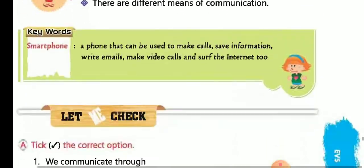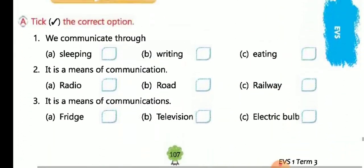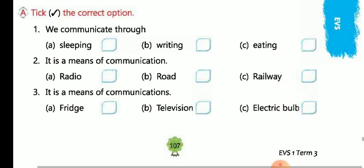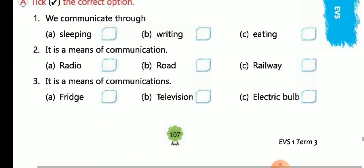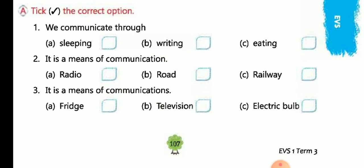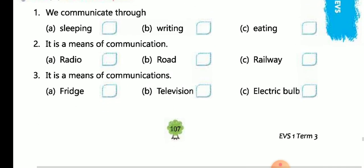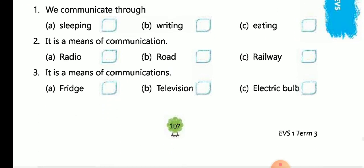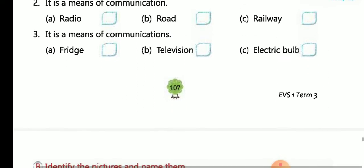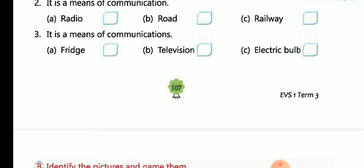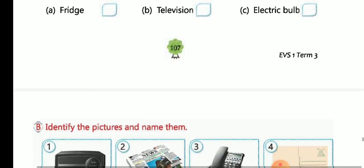Now we come to tick the correct option. We communicate through writing — very good, it is a means of communication. Radio — it is a means of communication. Television — it is a means of communication.